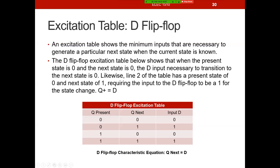We're taking a look at the D flip-flop. This excitation table shows the present state, the next state, and then what we're going to derive is the value of D. We do that using the characteristic equation. The D flip-flop characteristic equation is Q_next = D, which makes this D excitation table really easy to derive.